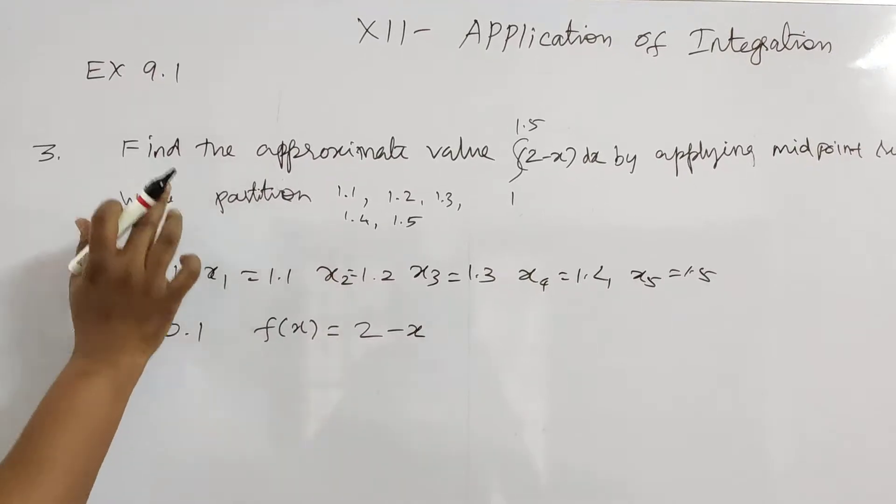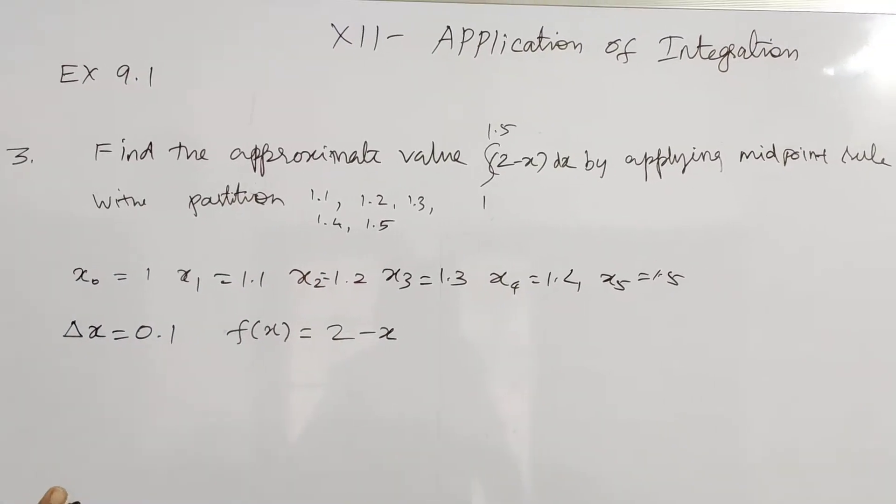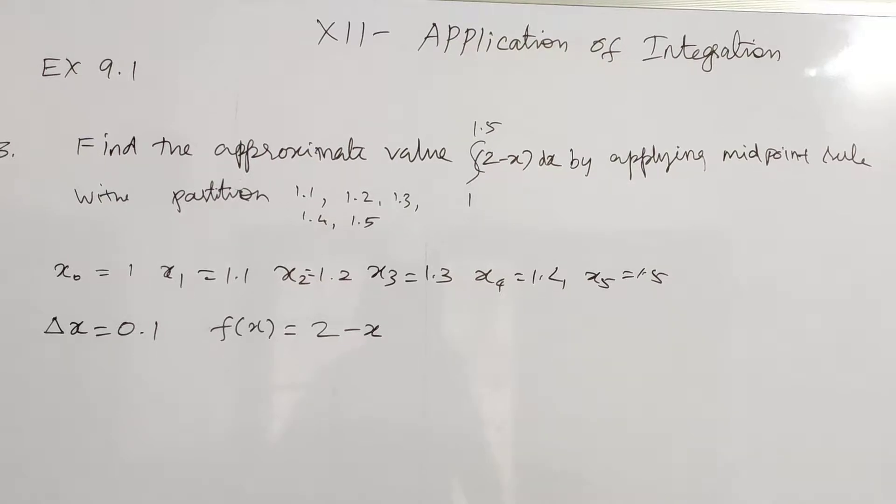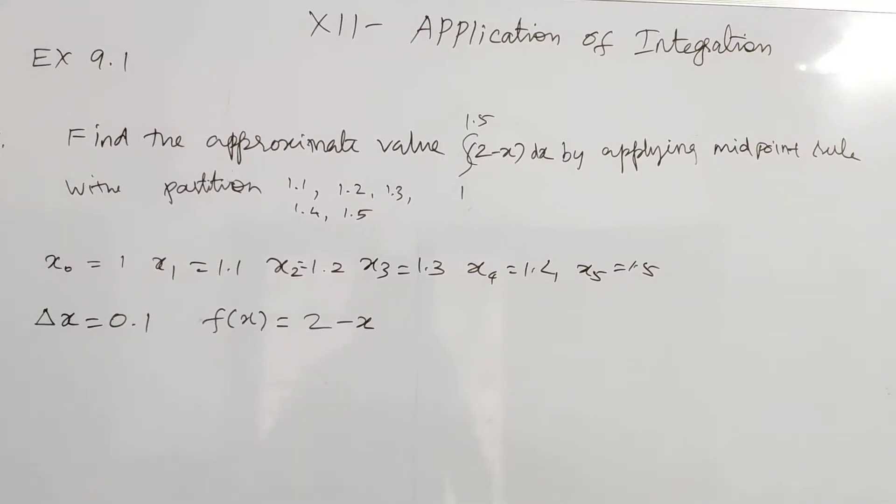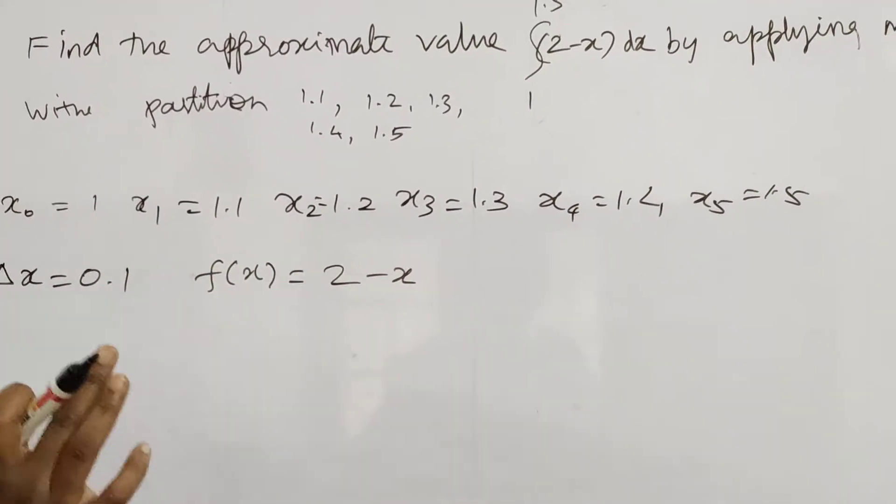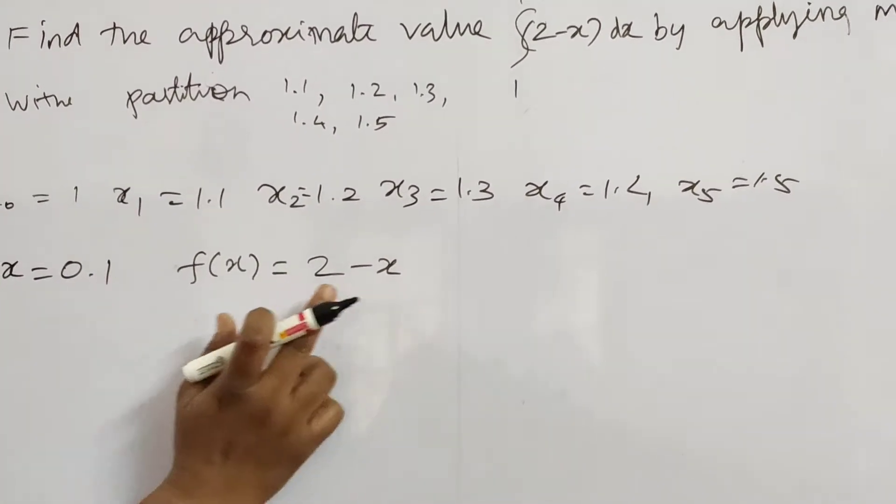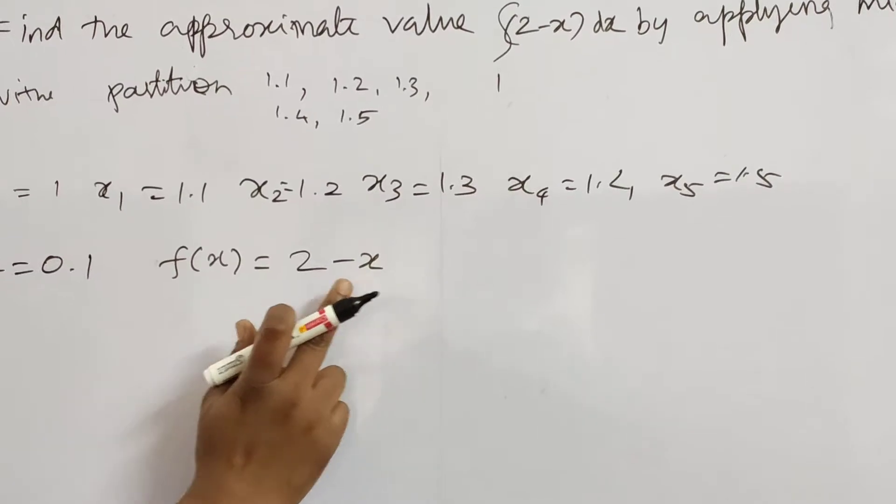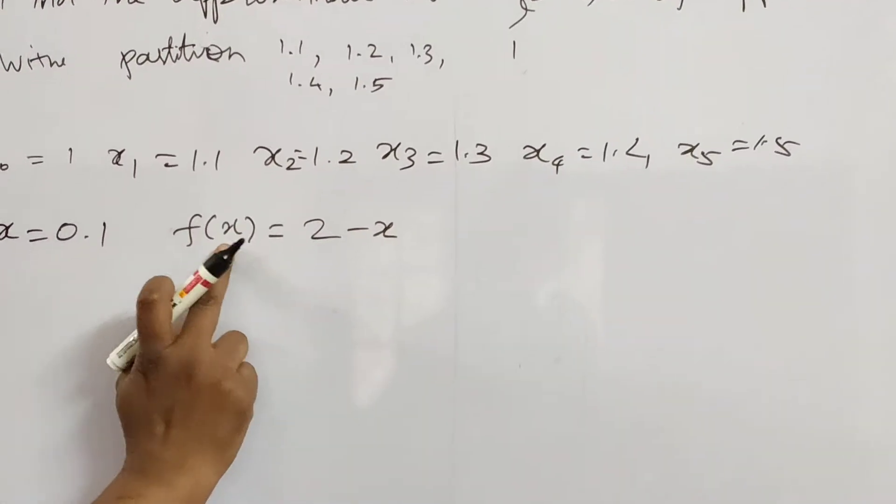Next, to find approximate value of integral 1 to 1.5 of 2 minus x dx applying midpoint rule with the same partition. So x0, delta x is 0.1, and f of x is the function 2 minus x.